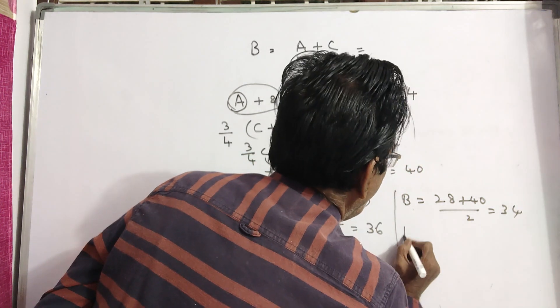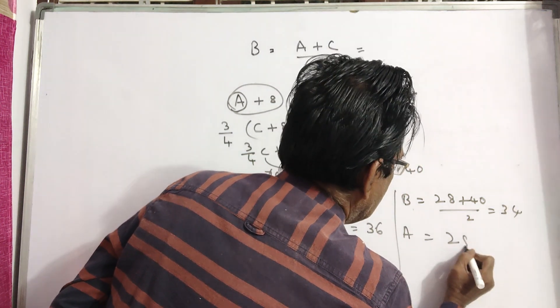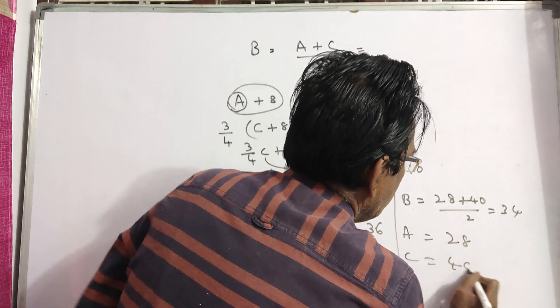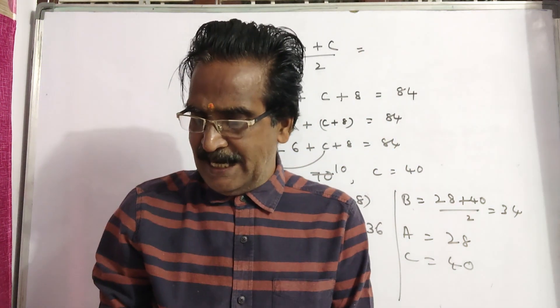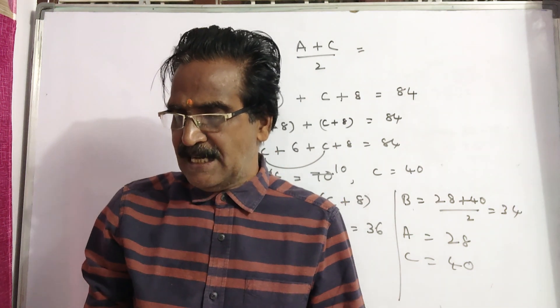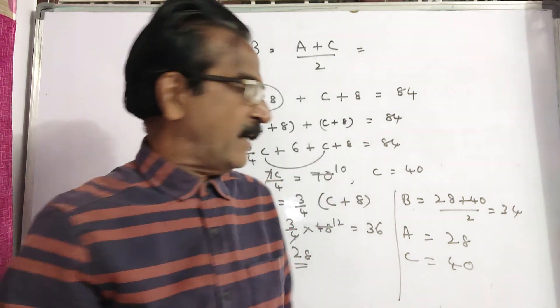Now B is 34, A is 28, C is 40. Here the question is, friends, who is the eldest one and by how many years is he older than the youngest one?